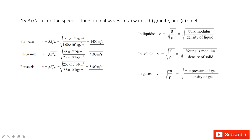We have these equations learned in our textbook. For a liquid material, the wave speed is the square root of B over rho, where B is the bulk modulus and rho is the density of the liquid. If it is solid, then V equals the square root of Y over rho, where Y is Young's modulus and rho is the density of the solid.